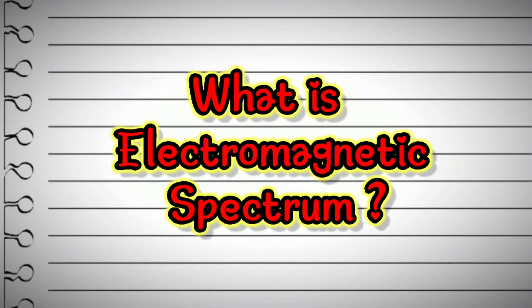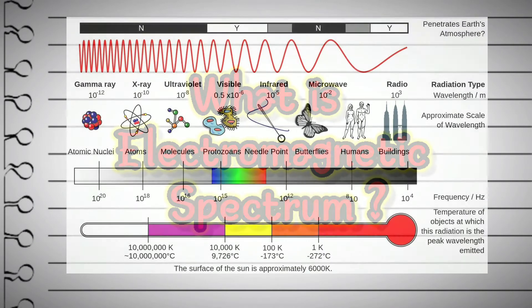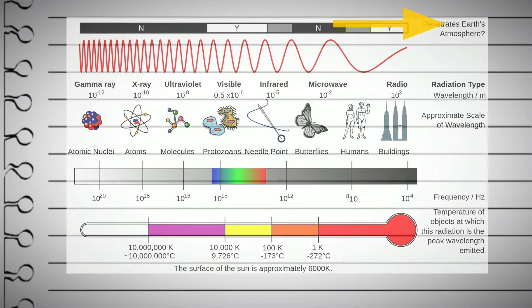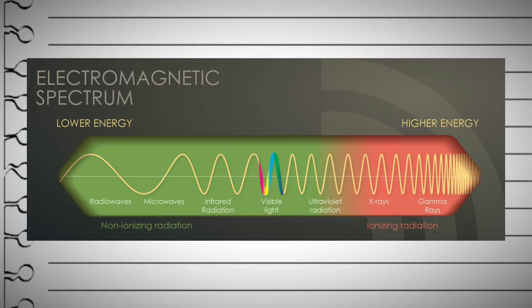What is the electromagnetic spectrum? The electromagnetic spectrum is the classification of electromagnetic radiations with respect to their wavelength. As the wavelength and frequency of electromagnetic radiations vary, the energy and other properties also change. The electromagnetic spectrum is mainly divided into seven main regions, and these seven regions of different wavelengths are considered to be seven different types of electromagnetic radiations.